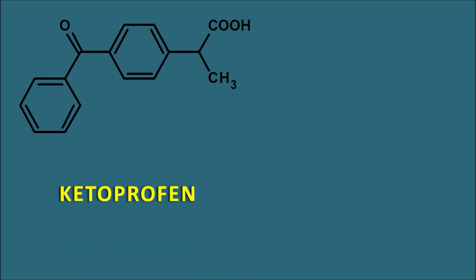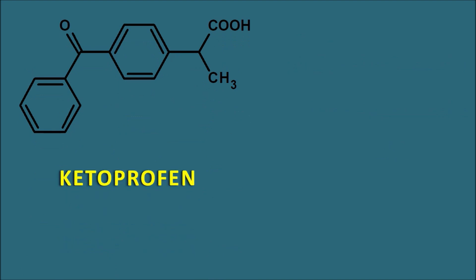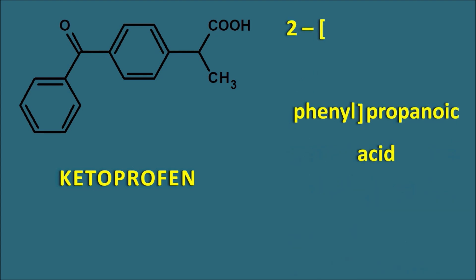The second drug is ketoprofen. Again we can observe a similar structure in ketoprofen — it is again a 2-phenyl propanoic acid derivative, but at the fourth position of this phenyl ring a different side chain is present. That side chain has a phenyl keto group, which is nothing but the benzoyl group. So we can write 4-benzoyl. A 2-phenyl propanoic acid derivative with a 4-benzoyl moiety is ketoprofen.